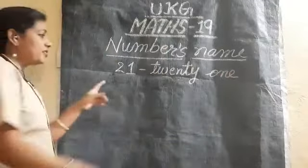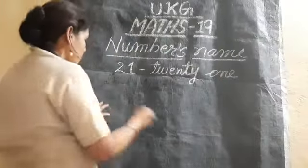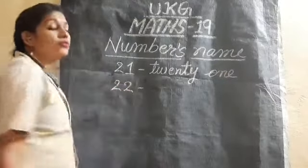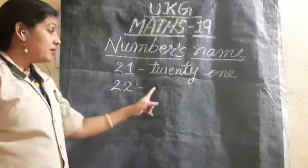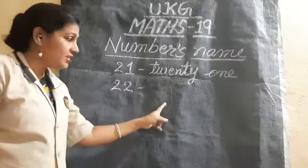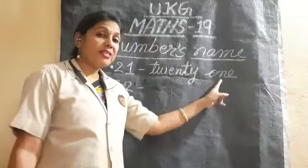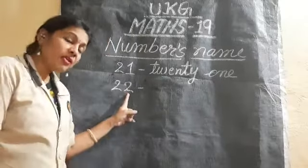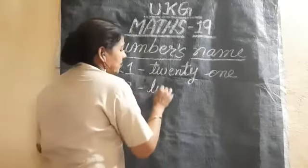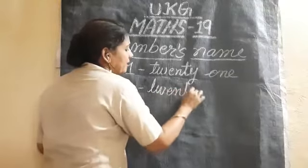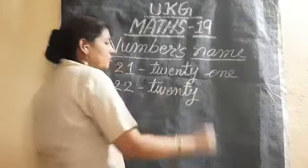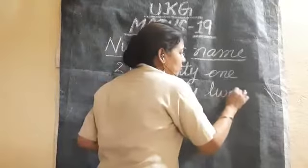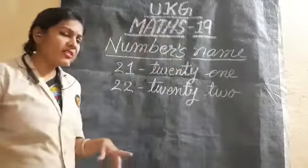Next is 22. For 22, first we write 20 — T-W-E-N-T-Y — and then in place of one, we write two. T-W-O. It is very simple.